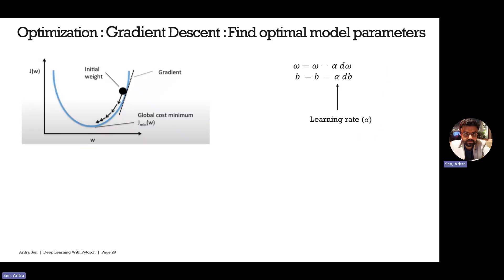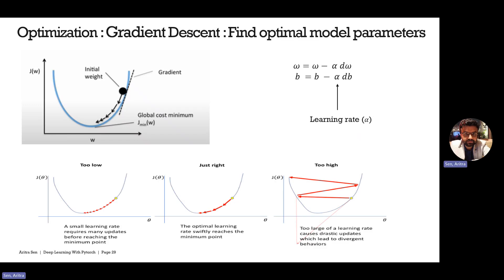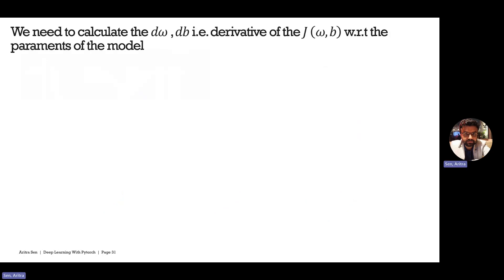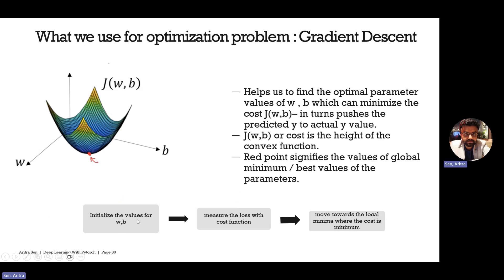As a refresher, gradient descent starts from a particular initialization of W and B (weights and biases, i.e., model parameters), and through an iterative process with a learning rate, changes the values of W to minimize the cost and reduce model error. We initialize W and B, minimize the loss with the cost function, and move toward the global minima where the cost is minimum. This red point represents the minimum cost, and our goal is to reach it using gradient descent so the predicted value is as close as possible to the actual value.